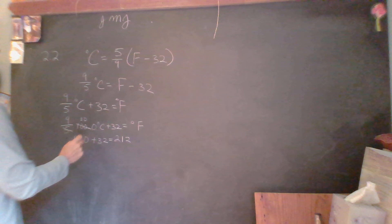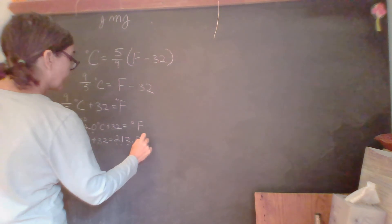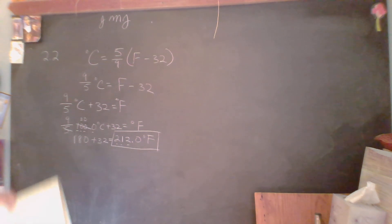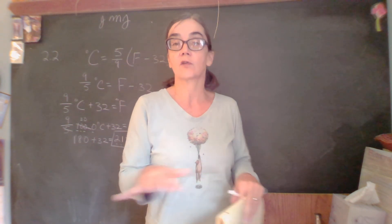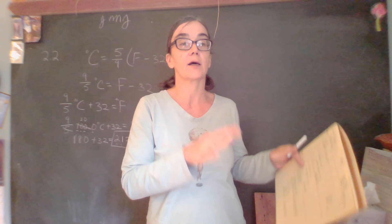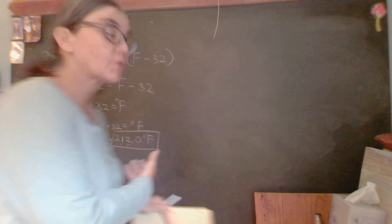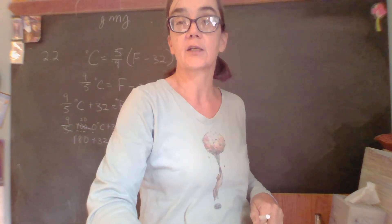My original equation was given to 4 significant figures, so I want to report with 4. Therefore, 212.0 degrees Fahrenheit is equivalent to 100.0 degrees Celsius. Now if we'd only been given 100 with no tenth place significant digit, we would only have to report this to three significant digits. So be careful with those significant digits.